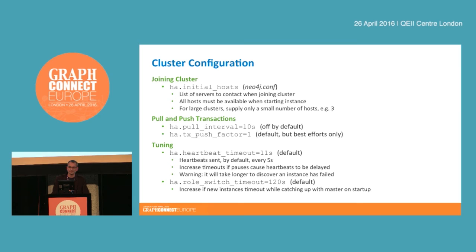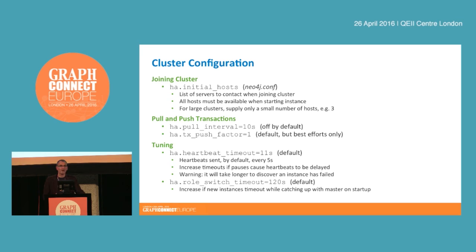The role switch timeout relates to starting up a new instance. If you're introducing a new instance into an existing cluster and it has to pull across the entire data set from the master, it's going to take a while before it can become a legitimate member of the cluster. The default is two minutes — if after two minutes it doesn't have the full data set, it will be marked as failed. You can increase that timeout to perhaps five or ten minutes if you've got a very large data set.